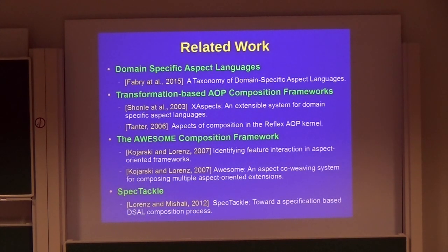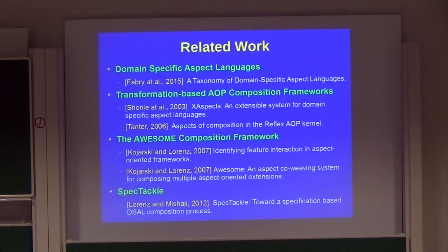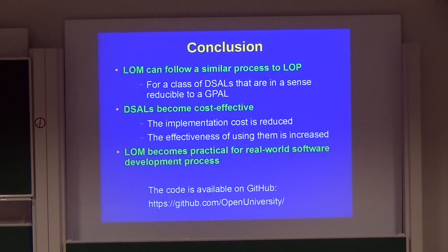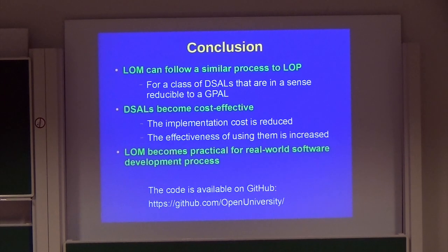This work focuses on domain-specific aspect languages and presents a transformation-based approach for their implementation that can address multi-DSAL conflicts, all done inside the language workbench just like a DSL. In conclusion, we showed that LOM can be similar to LOP for a subgroup of DSALs — those that can be translated to existing GPLs — and that this subgroup is meaningful because it can solve real-world problems. These DSALs become cost-effective: we reduce their implementation cost and increase their effectiveness, and by that LOM becomes practical. All related code is available on our project page.